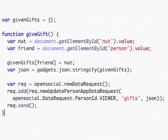The last and most important step is writing the GiveGift function. This function takes the gift and the friend that we wish to send the gift to and saves them into the persistent data storage of the OpenSocial API.